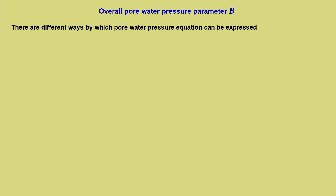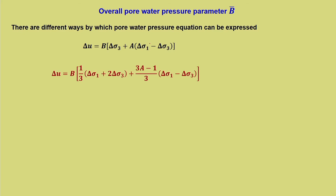There are different ways by which the pore water pressure equation can be expressed. Before going to B-bar, we will see a typical representation of the pore water pressure equation. This can be written as: delta u = B into [1/3 (delta sigma 1 + 2 delta sigma 3) + (3a - 1/3)(delta sigma 1 - delta sigma 3)]. This last term is the deviator stress q, which we have seen in the previous lecture.